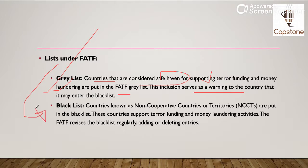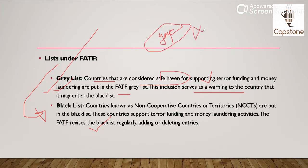Ab black list karne ka kya matlab hai? Agar ye countries phir bhi support karti rehti hain terror financing ko aur money laundering activities ko, toh unko black list mein daal diya jayega. Aur iska matlab ye hoga ki IMF, World Bank aur baaki jitne bhi world ke institutions hain jisse ye loan le sakti hai woh country — woh loan kya ho jayenge? Band ho jayenge.